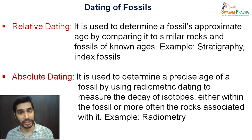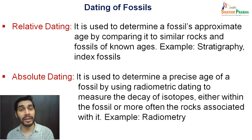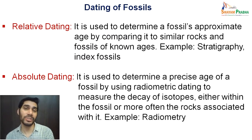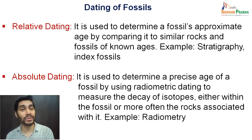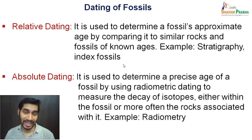Assume that you have found a fossil and you don't know its actual age, but you know the age of the rock where you found it. Based on that, you can predict the age by correlating it with the rock's age. Another example: if you have a fossil and nearby you have another fossil whose age is already known, you can predict the age of the new fossil based on the known one.